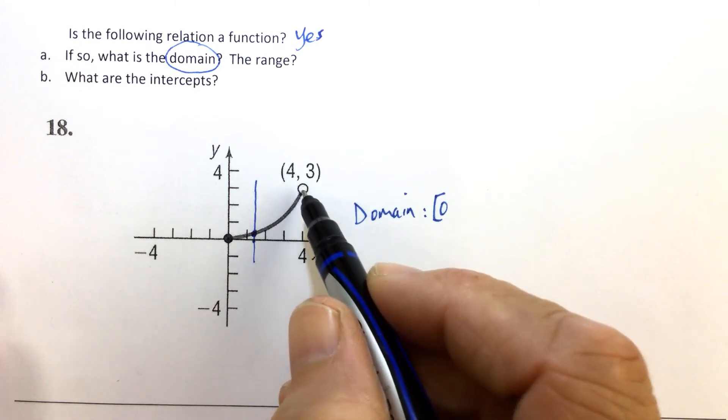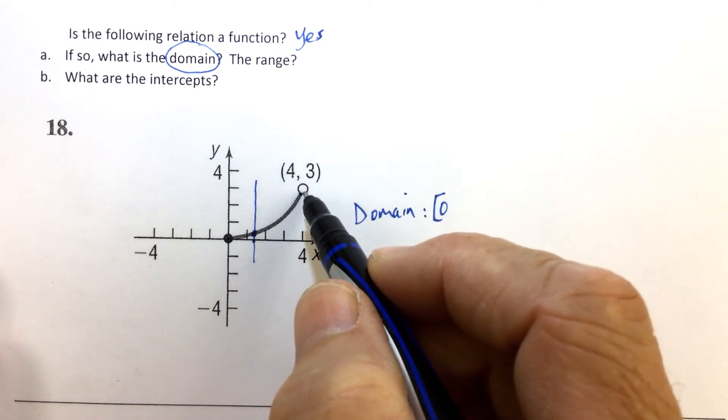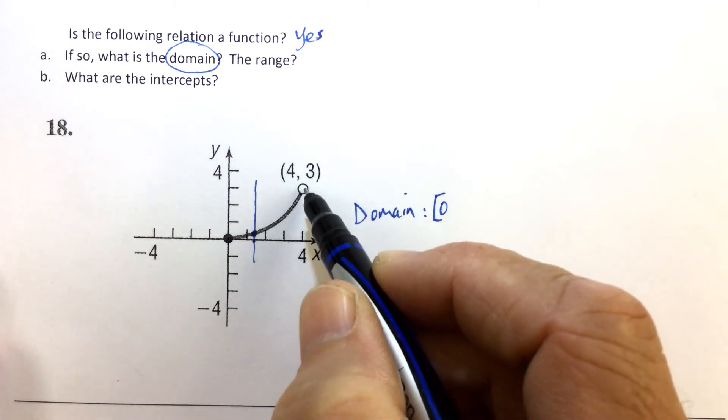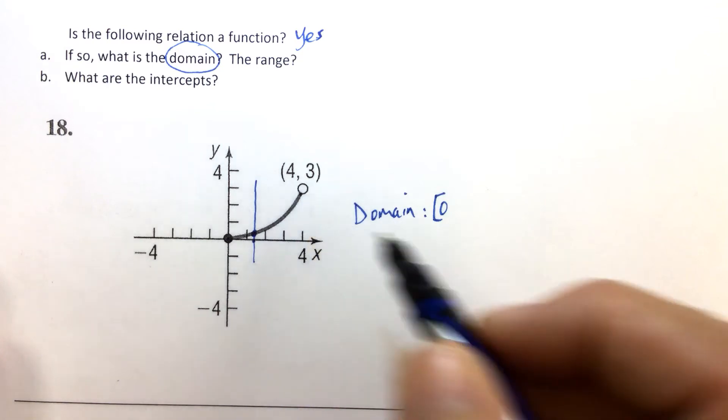This open circle means that as soon as we get to 4, there is no output. Even though the coordinates of that hole are (4, 3), if you plug a 4 into this function, you don't get anything out. That's why we have an open circle there.